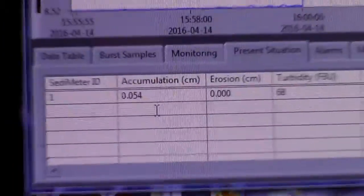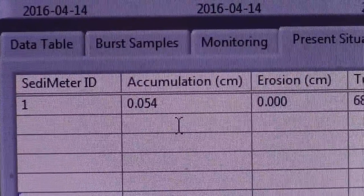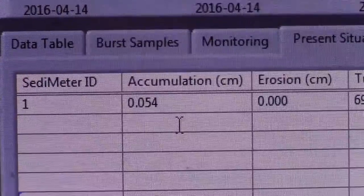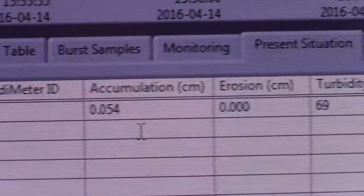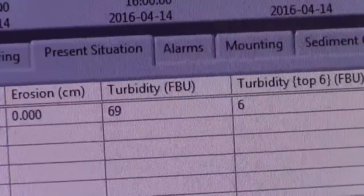So in this case we have an accumulation of 0.054 centimeters or half a millimeter, and then it shows the turbidity.